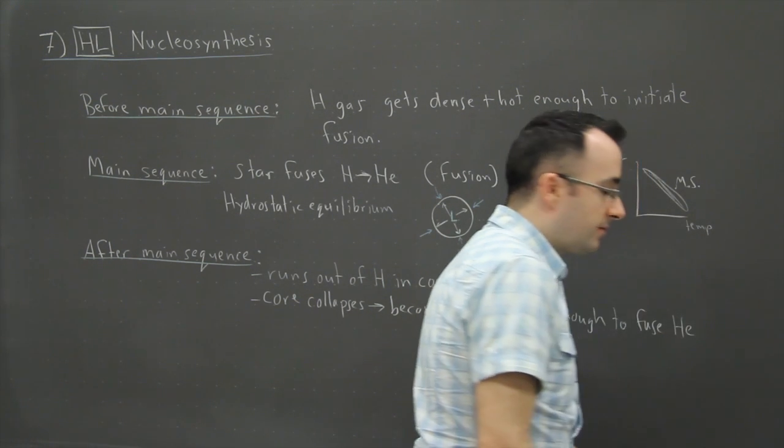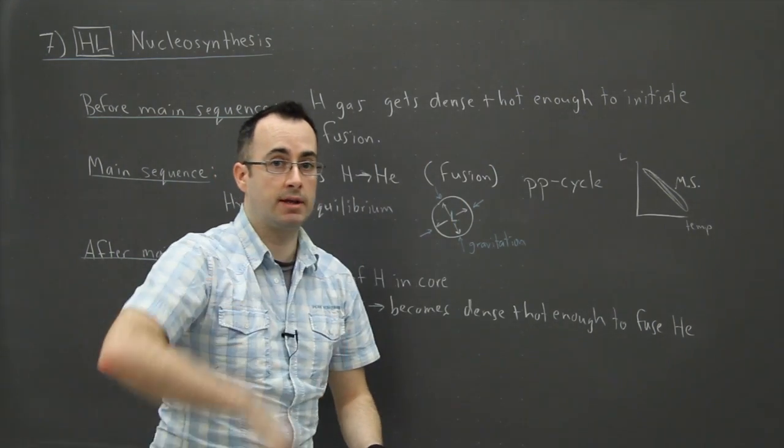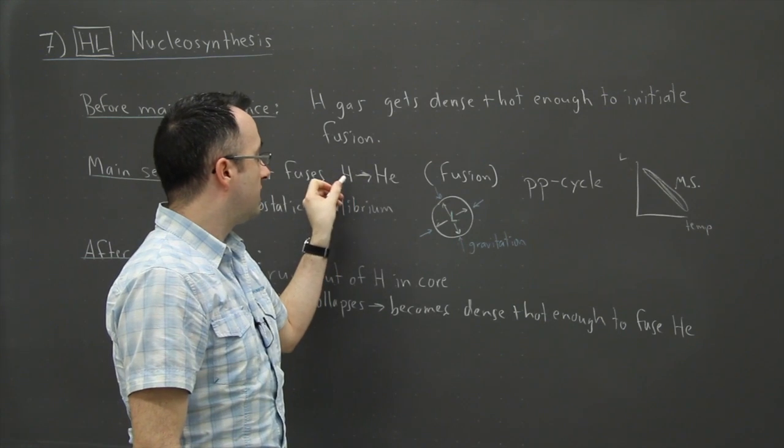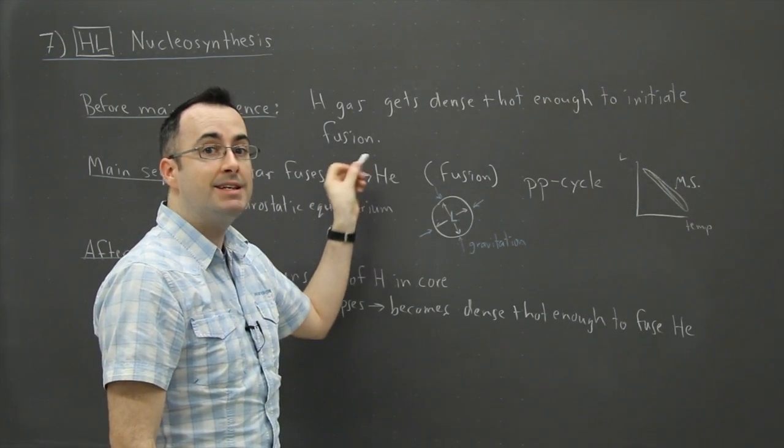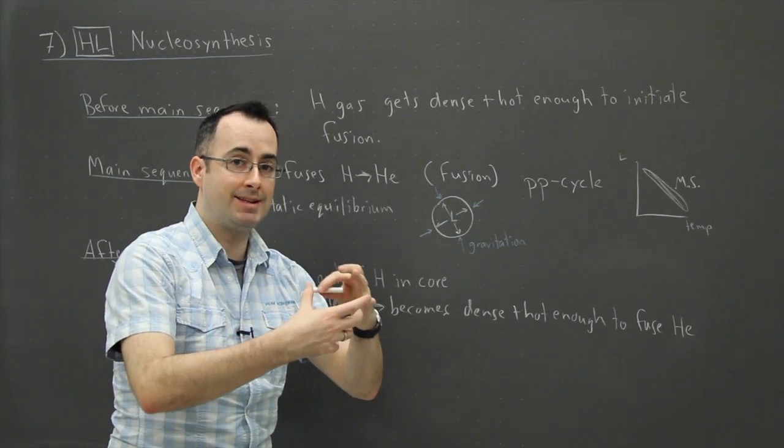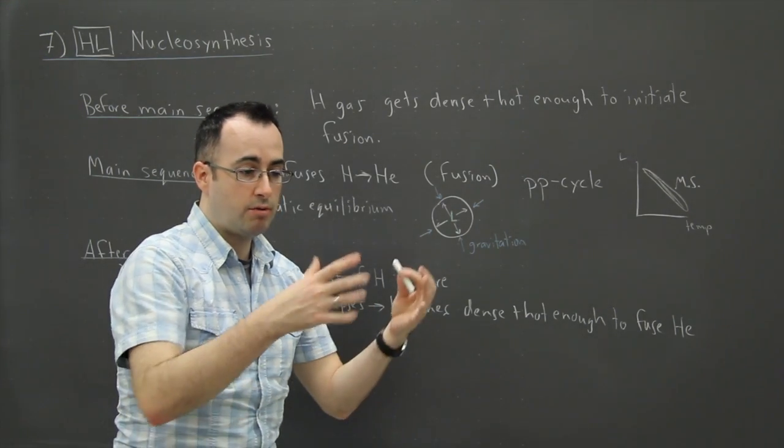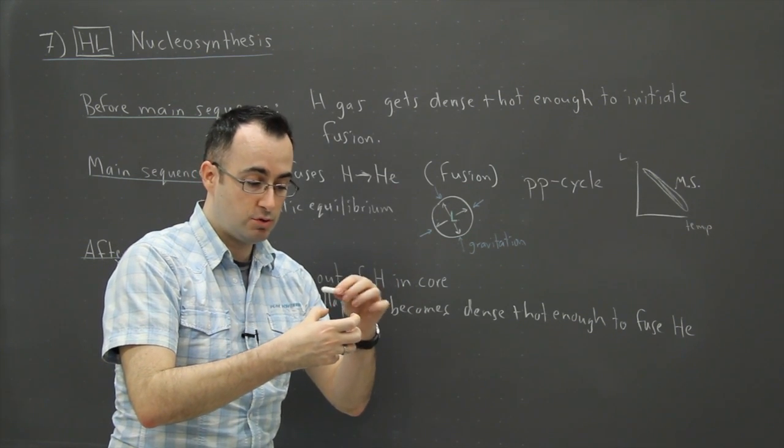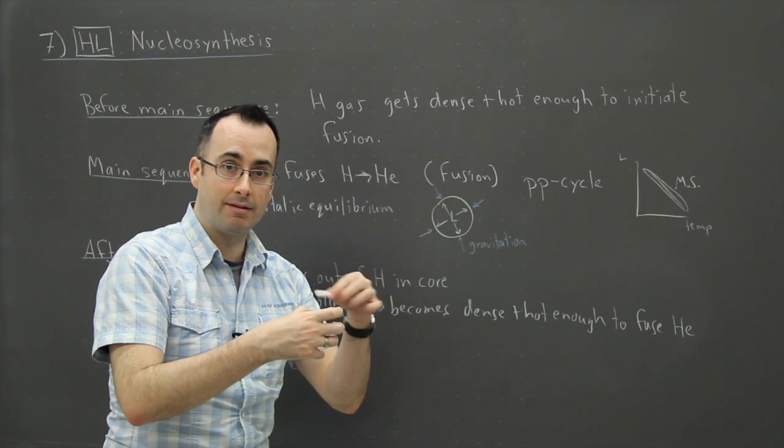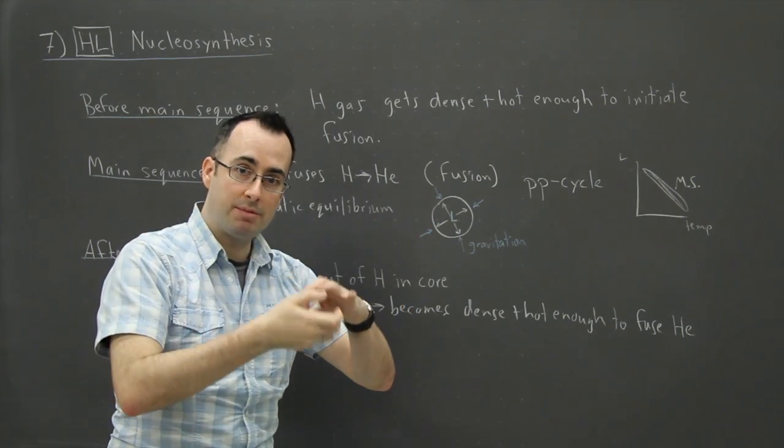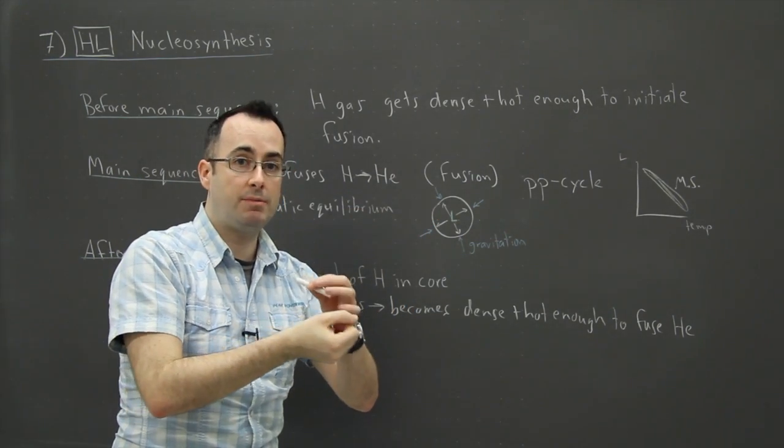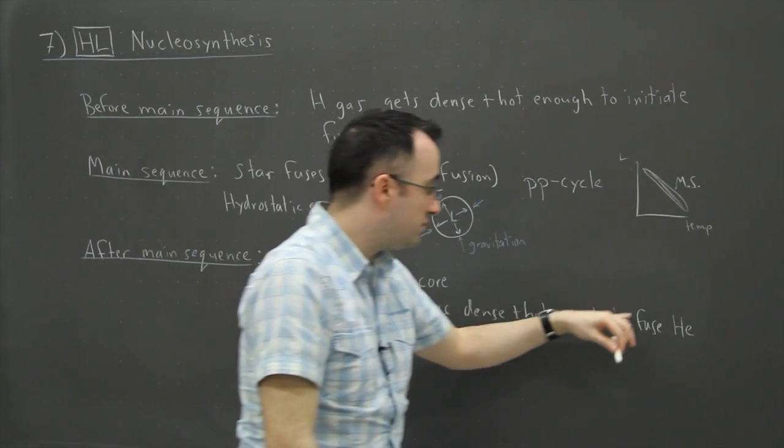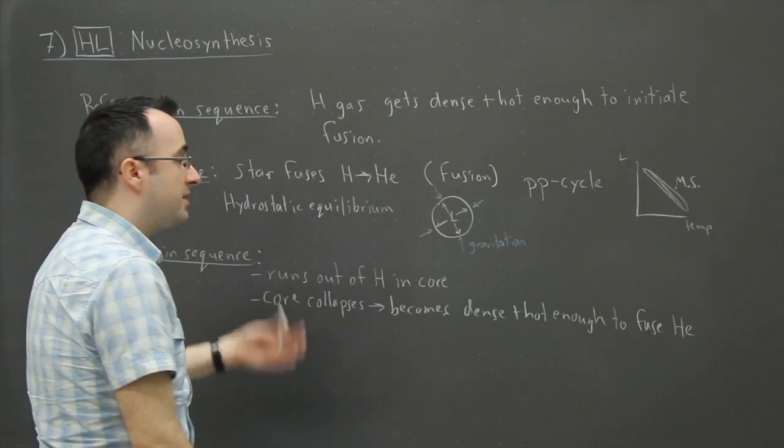In other words, now we start the next process. In order to have hydrogen fusing, in order to have fusion of hydrogen into helium, you need a certain temperature and density. And of course, when you run out, then you don't have enough temperature or density to fuse that helium that's sitting there. So what happens then, the core collapses because gravity wins. And then the core then becomes hot enough and dense enough to now start actually fusing helium. So that's what happens there.